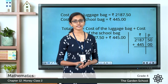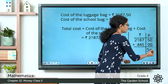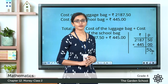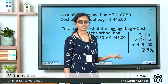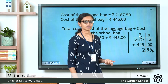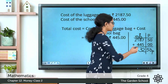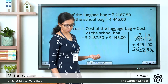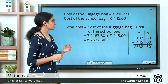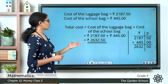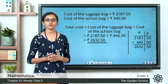Starting with the paise column: 50 paise plus 0 paise equals 50 paise. Moving to the rupee column: 7 plus 5 is 12 — write 2, carry 1. Then 8 plus 4 is 12, plus 1 is 13 — write 3, carry 1. Then 1 plus 4 is 5, plus 1 is 6. Then 2 remains. So the total cost is 2632 rupees 50 paise. It cost Arya 2632 rupees 50 paise to buy both bags.